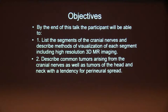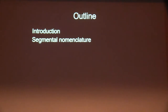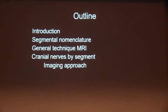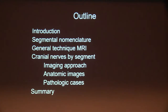We'll describe some of the common tumors in passing and identify some of the primary tumors. We'll talk about the segmental nomenclature, general MRI technique, high-resolution MRI technique, and then we'll talk about the cranial nerves segment by segment and discuss our imaging approach to each segment, looking at some anatomic and pathologic images.